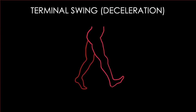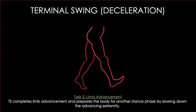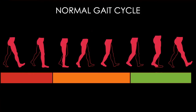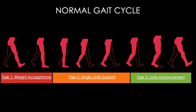In terminal swing we are starting to slow our leg down. The limb is still advancing, but this is the last phase of our normal gait cycle and the body has to prepare itself for another gait cycle on the opposite extremity. To wrap up, the normal gait cycle involves three functional tasks: weight acceptance, single limb support, and limb advancement. All three tasks must occur during each gait cycle on each limb so that we can efficiently and effectively progress our body forward.